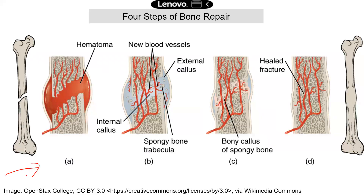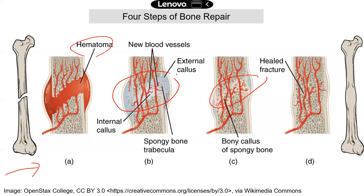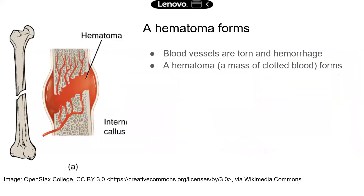In general there are four steps in bone repair, shown in this diagram. The first step is the formation of a hematoma. Then a fibrocartilaginous callus — a soft callus — will form. Next, this soft callus will be converted into a bony callus of spongy bone. Eventually the bone will be remodeled and the fracture will be healed. Let's look at each step more closely.